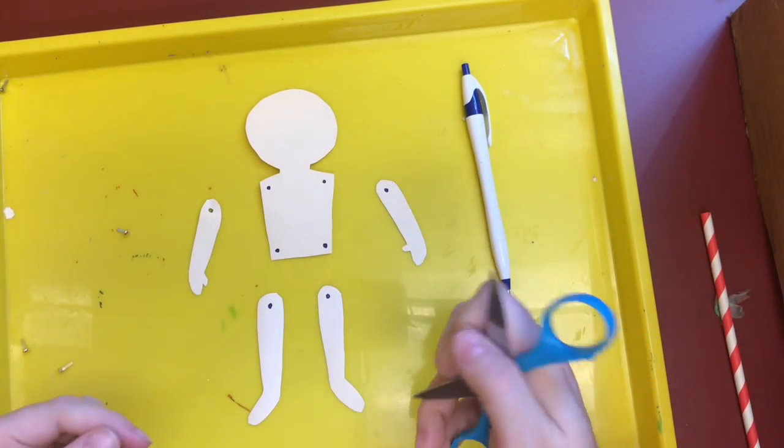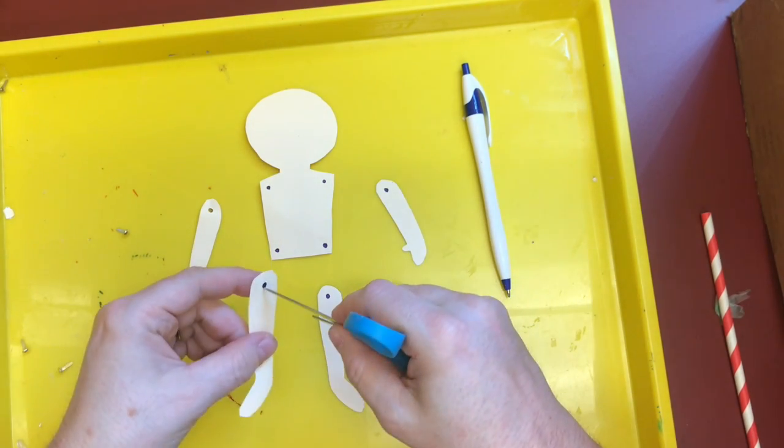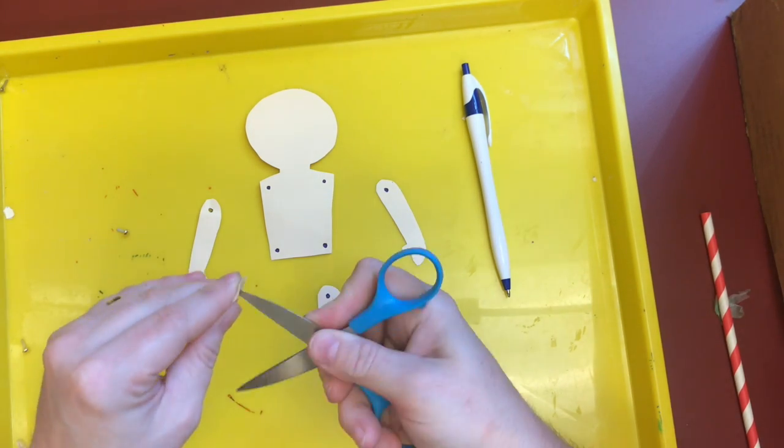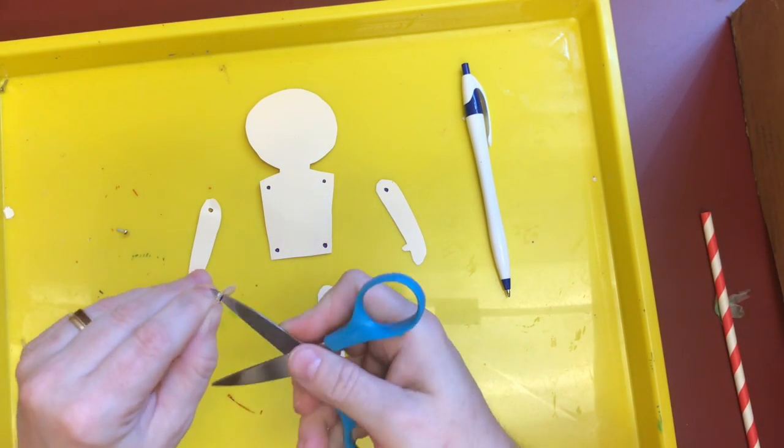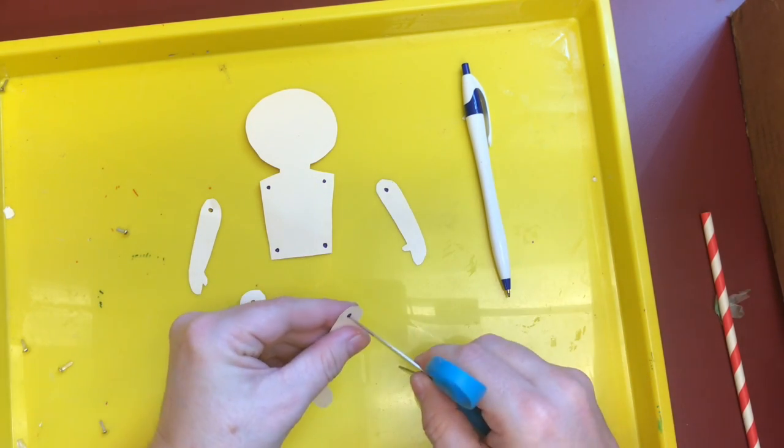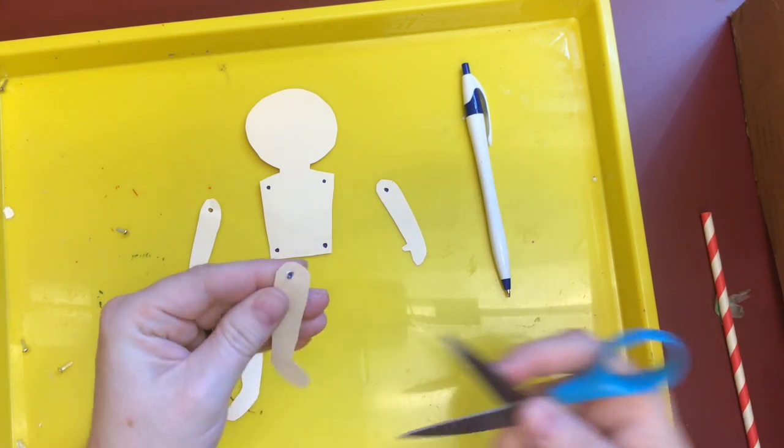Or, and this is the one that you really want a grown-up to help with, if you have a pointy end on your scissors, you can use that very carefully to poke holes in your puppet's arms and legs and body. And that works very well.